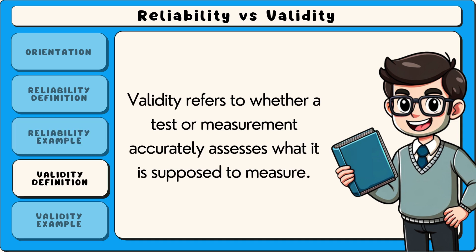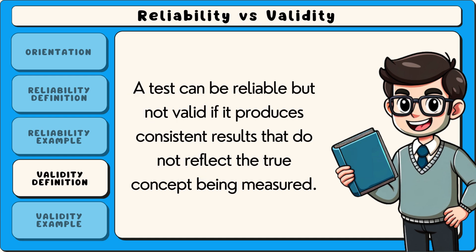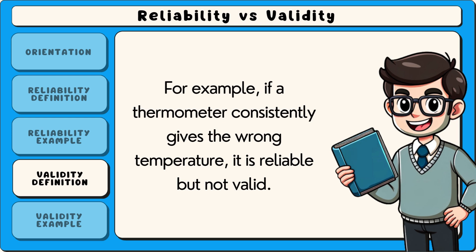Validity refers to whether a test or measurement accurately assesses what it is supposed to measure. A test can be reliable but not valid if it produces consistent results that do not reflect the true concept being measured. For example, if a thermometer consistently gives the wrong temperature, it is reliable but not valid.